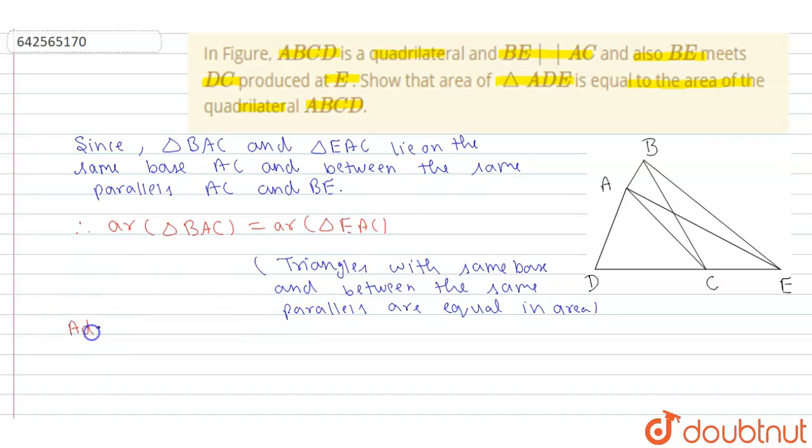area of triangle ADC on both sides. Area of triangle BAC plus area of triangle ADC